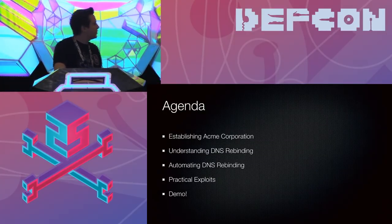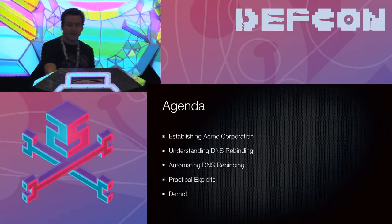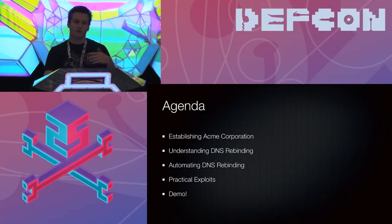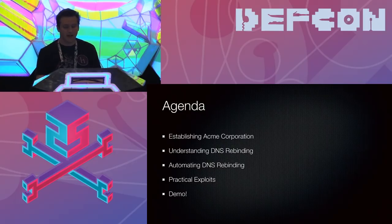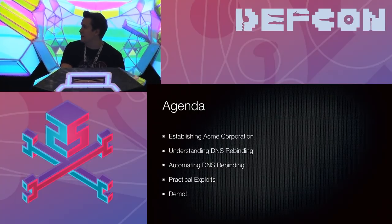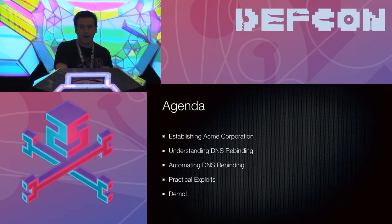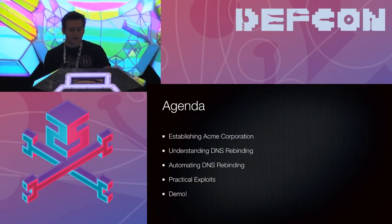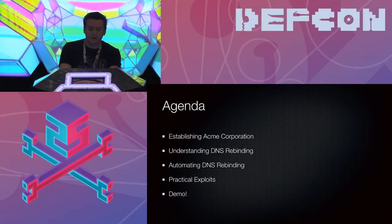Here's how we're going to talk about this today. We're going to establish a fictional company called Acme Corp and use that for all of our references so everyone can understand DNS rebinding. We're going to establish a network topology, talk about how DNS rebinding could be leveraged in an attack against this company, how to automate that using the tool I built — which will be released at the end of the talk — and finally some practical exploits of DNS rebinding against real tools and applications.